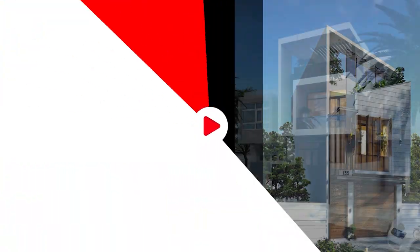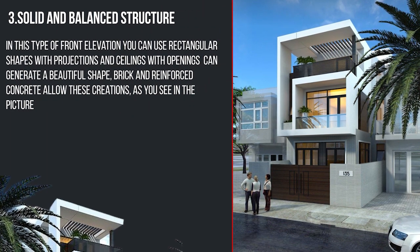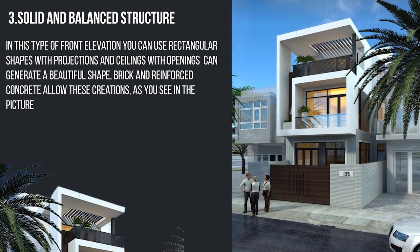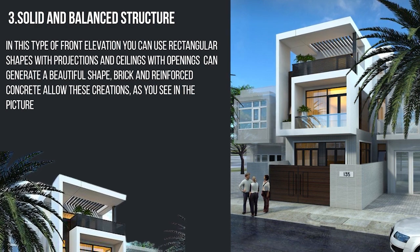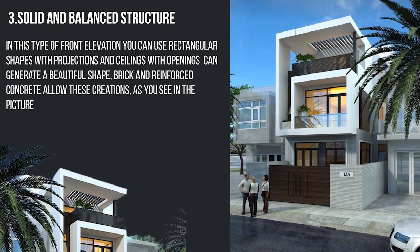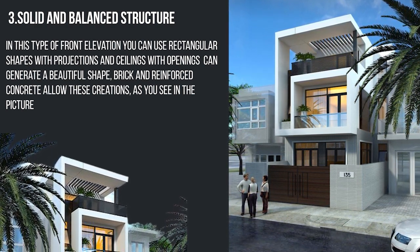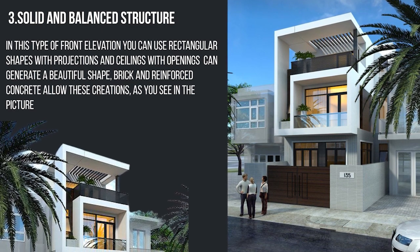The third type is solid and balanced structure. In this type of front elevation, you can use rectangular shapes with projections and ceiling with openings that generate a beautiful shape. Brick and reinforced concrete allows this creation.